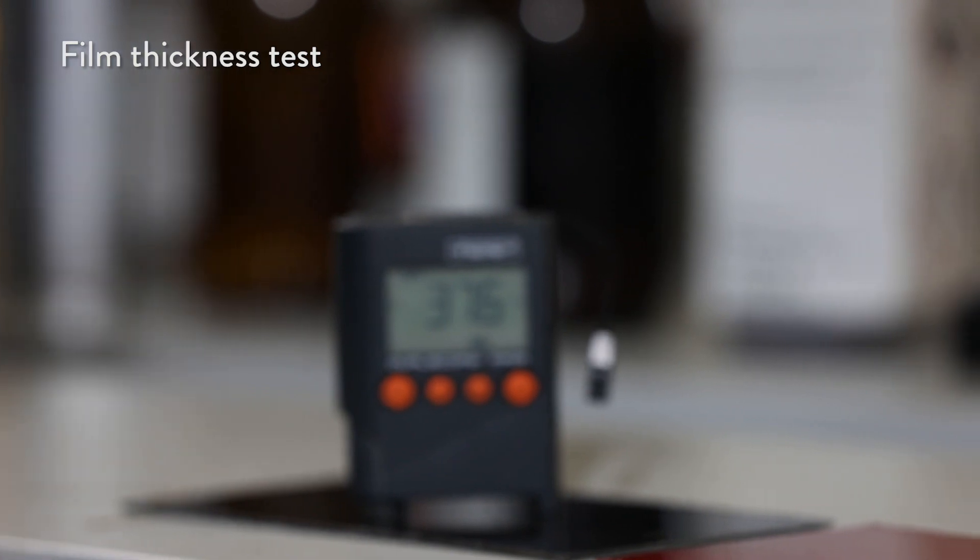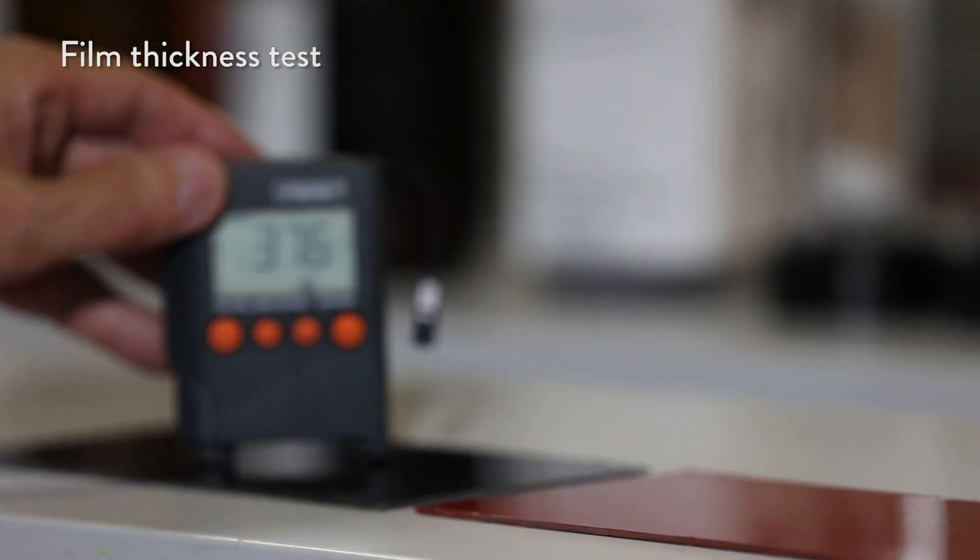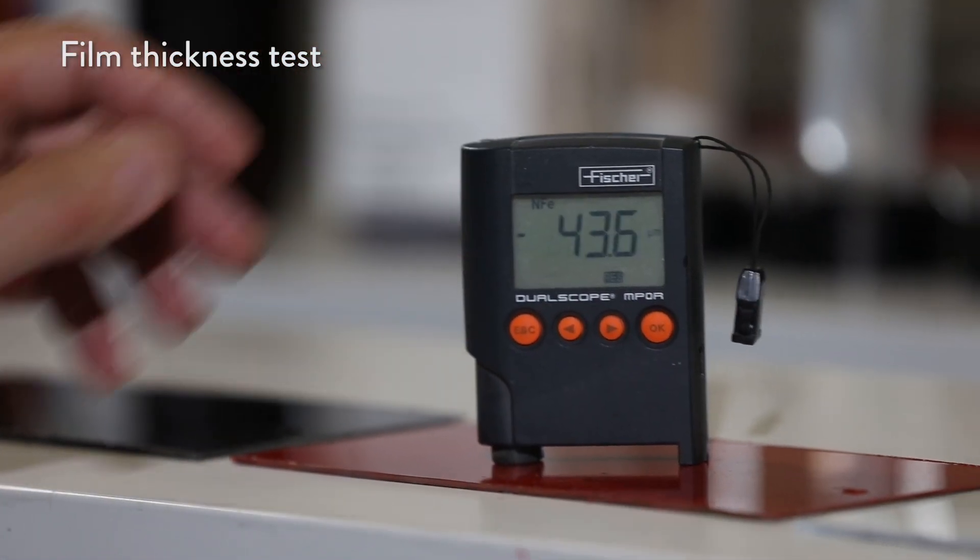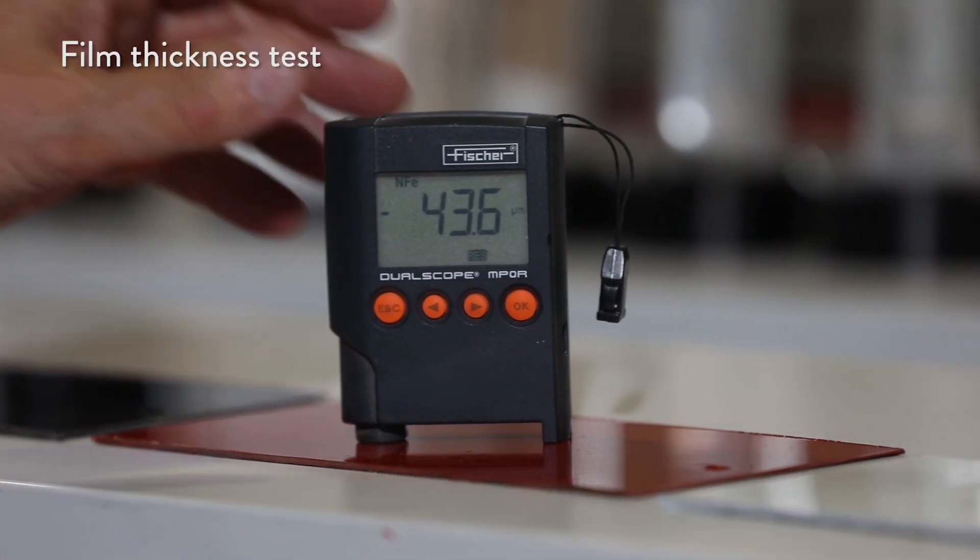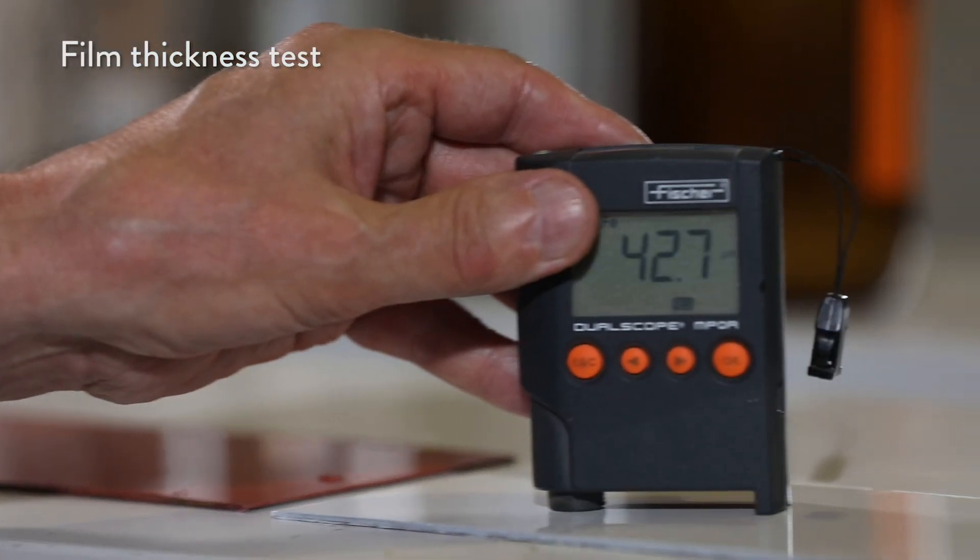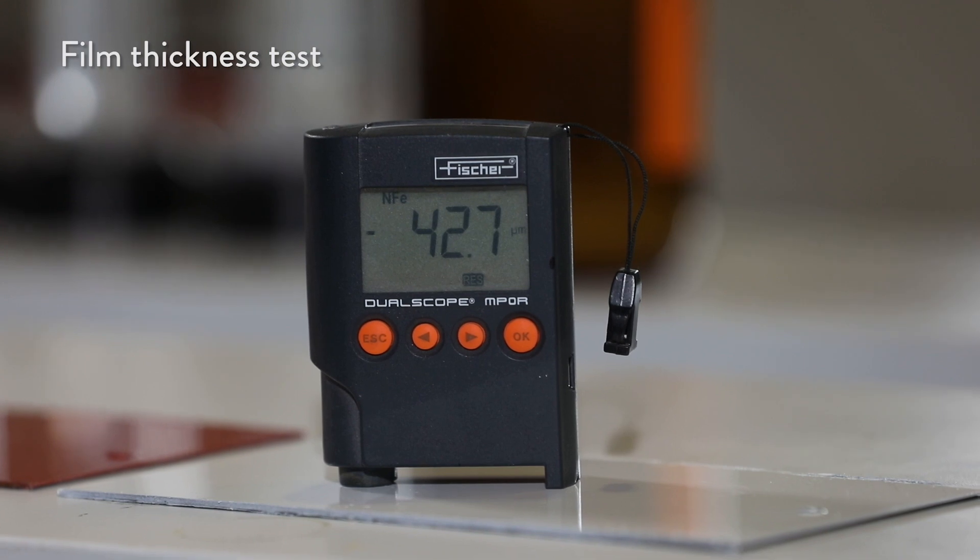The film thickness is critical for surface protection. One and a half cross layers of 2K creates a film thickness around 40 microns. You'll get enough protection at once without any risk of dripping.